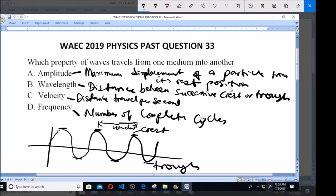Amplitude is the distance from here to here. That is amplitude. Then what we call frequency is what is covered in a complete cycle.